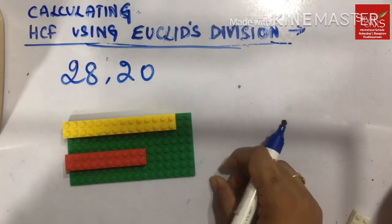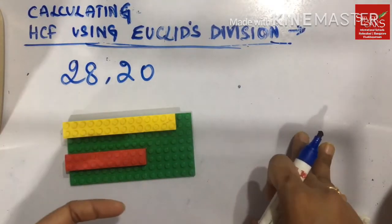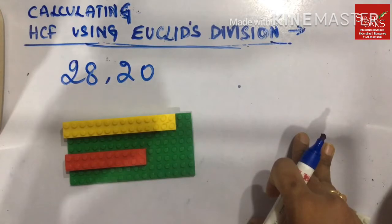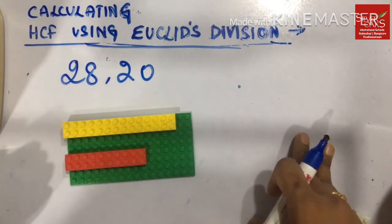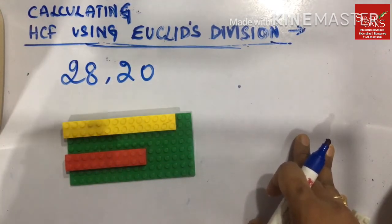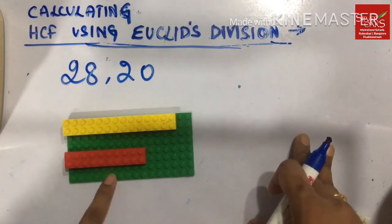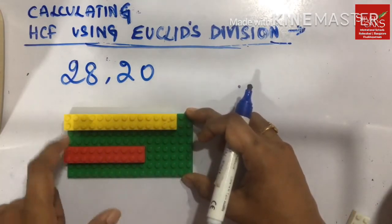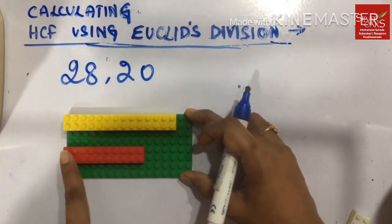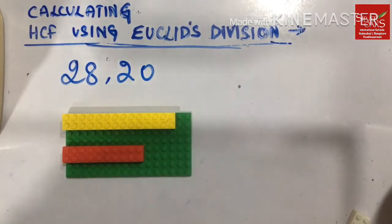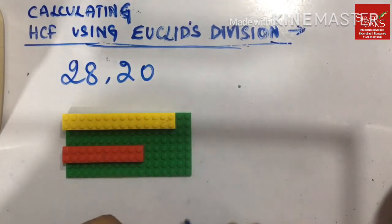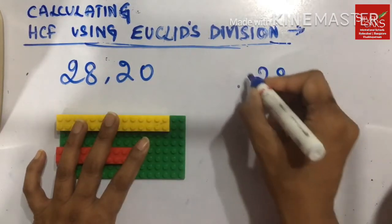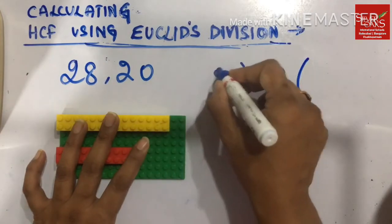I am sure you must be wondering how this long division method works — where we use the remainder as our divisor and find the highest common factor. So let us try to understand this using an activity. I am trying to find the HCF of 28 and 20. I have taken a Lego base with block size of 28 dots and also a block size of 20 dots. The Euclid division method says you take your larger number as your dividend and divide with 20.